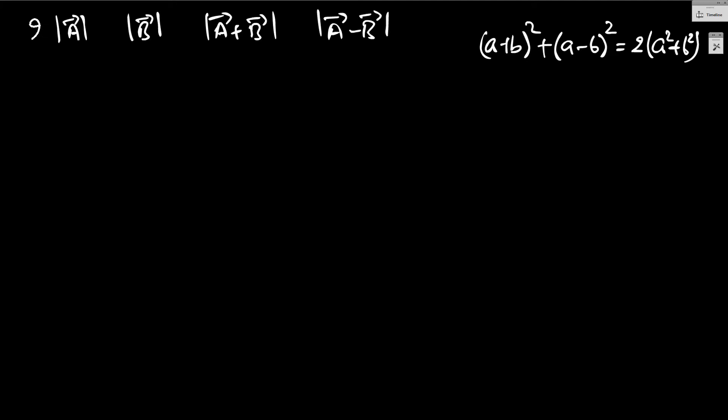2 times a square plus b square can be written as a plus b the whole square plus a minus b magnitude the whole square.